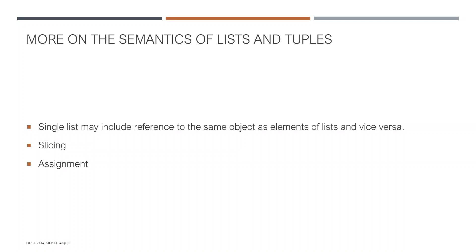A single list can have references to the same object as elements of lists, and the same elements can be accessed by two different references. This is important—this goes back to something called aliasing. This is evident in slicing and assignment. Let's say I have list one.